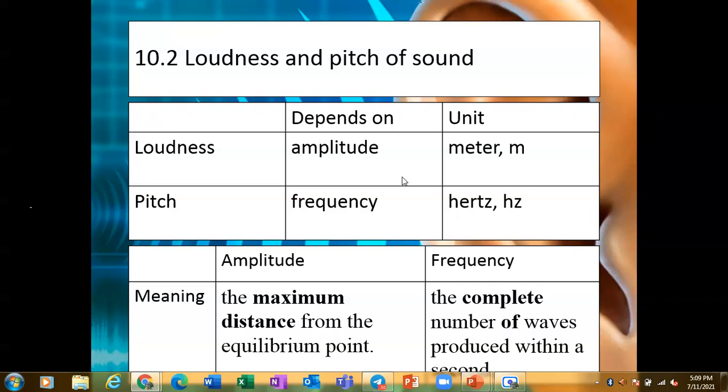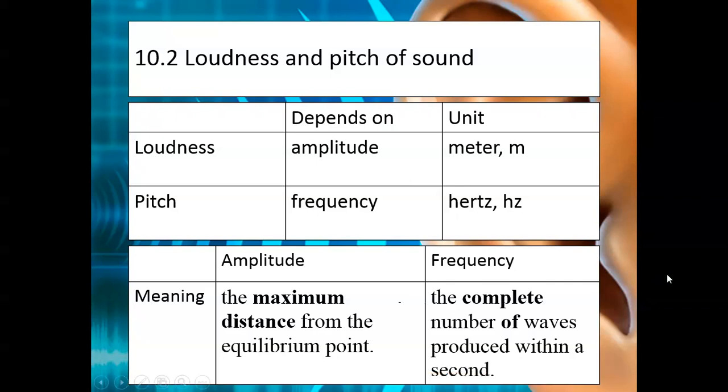What is the definition for amplitude? Amplitude is the maximum distance from the equilibrium point. Frequency is the complete number of wave produced within a second. Amplitude adalah jarak maksimum, jarak yang paling tinggi daripada equilibrium point. We will look at this in graph form.